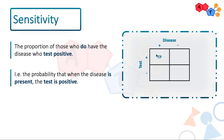Some people do have the disease and they'll get tested positive — that's a true positive. Some people do not have the disease and they'll get tested negative — that is a true negative. Now sometimes you can have mistakes. Sometimes the person does have the disease but they'll get tested negative — that's a false negative. Sometimes people do not have the disease but they'll get tested positive — that's a false positive. Keep these terms in your head as they'll become very relevant in the next few concepts.